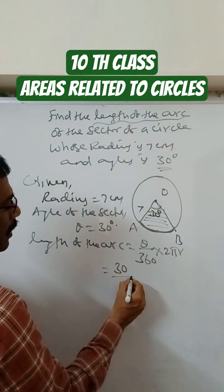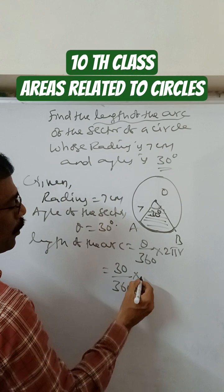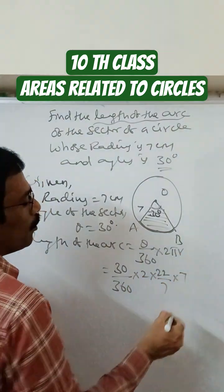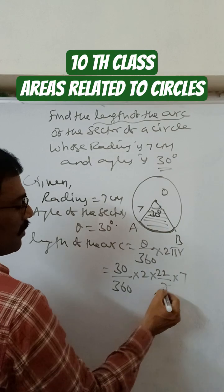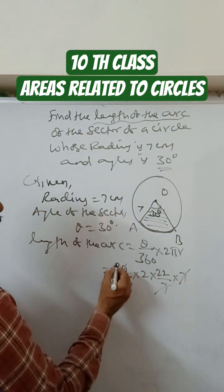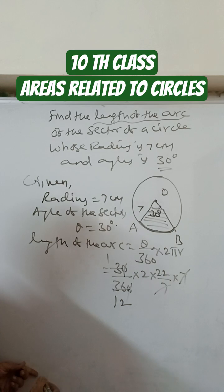That is equal to 30 by 360 into 2 into 22 by 7, pi means 22 by 7, into 7. Seven and seven cancel, zero and zero cancel, three into one, three into twelve.